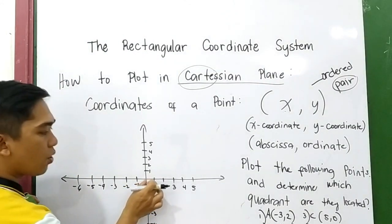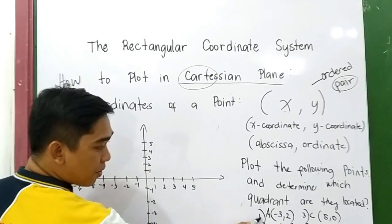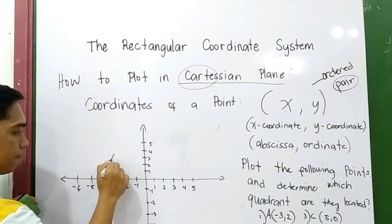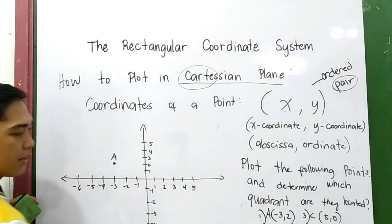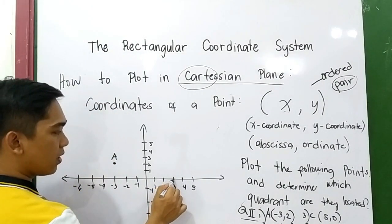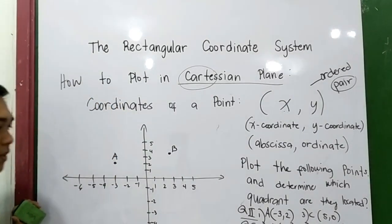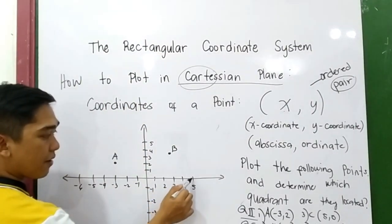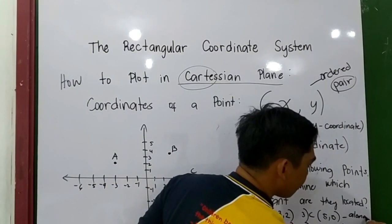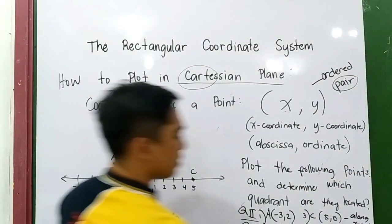Take note that we must have the same calibration in every unit. So let's plot number one. A is negative 3, 2 — letter A is in quadrant 2. Letter B, 3 and 4 — it is in quadrant 1. Letter C, 5 and 0 — where is 5, and origin 0 is here, it's along the x-axis. Letter D, 3, negative 3 — so it's in quadrant 4.